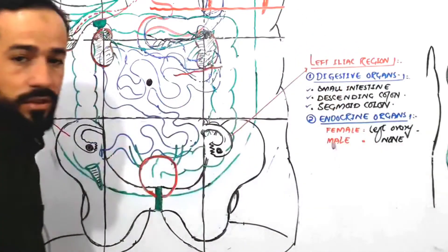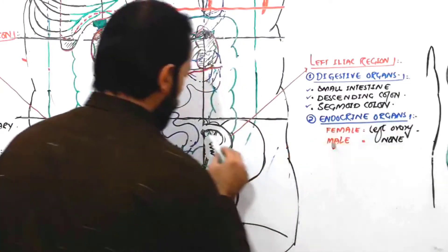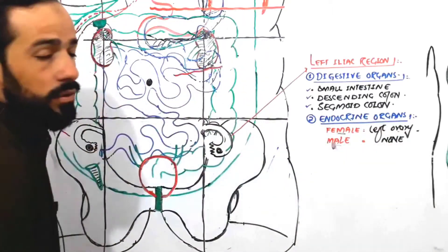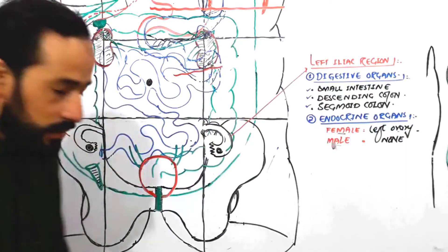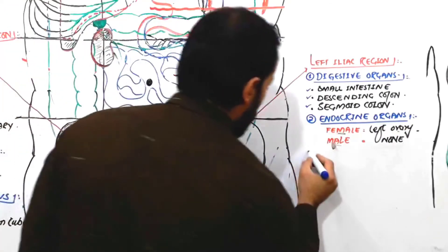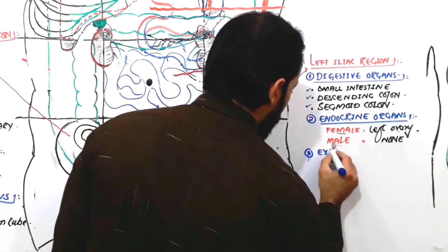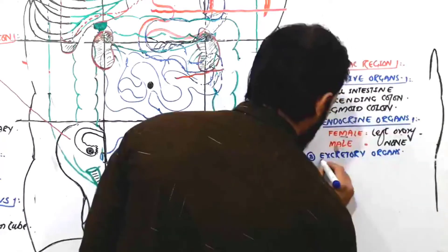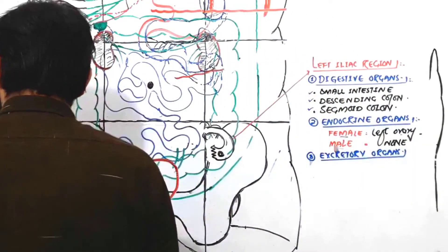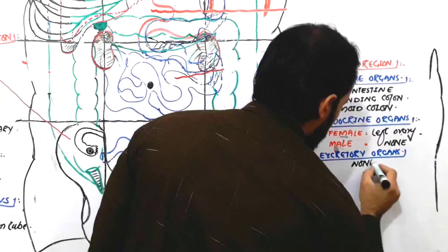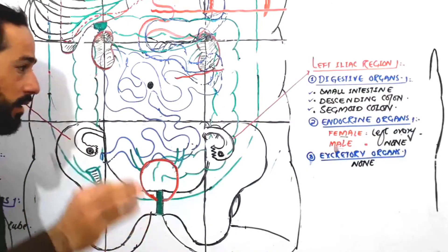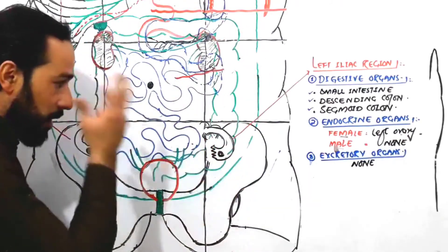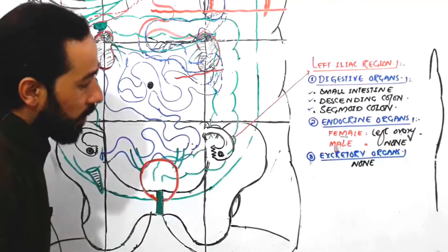To summarize the endocrine organs: in the case of a female, the left ovary is present in the left iliac region; in the case of a male, there is no endocrine organ present. Moving to the third group — the excretory organs — none of the excretory organs are present in your left iliac region.